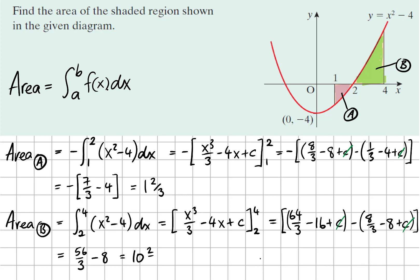So the total area is the sum of these two parts: 1 and 2/3 plus 10 and 2/3, which is a total of 12 and 1/3, or 37/3 if you wish, units squared.